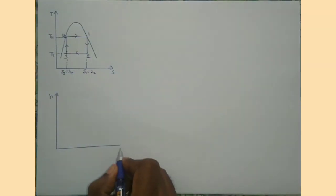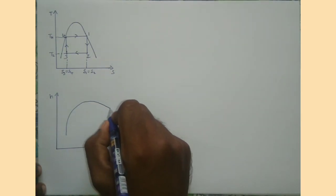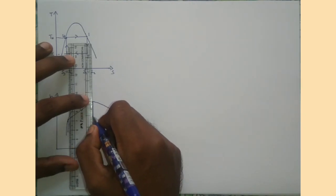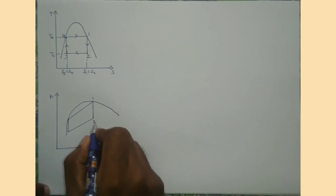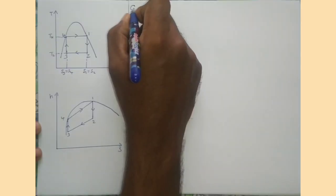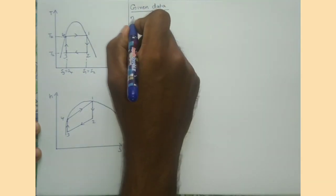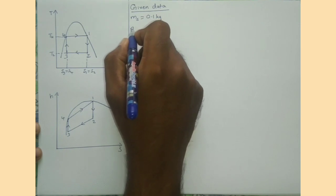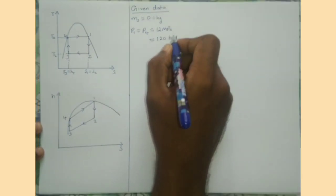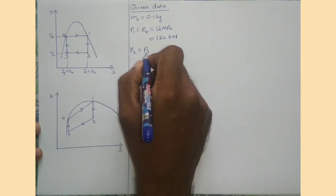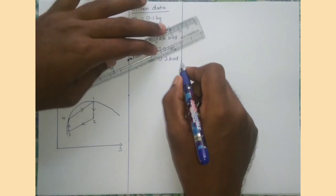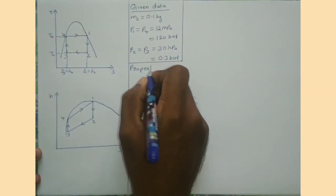Now I am drawing the HS diagram of the Carnot cycle. Now we can write the given data of the question. The mass of water or steam is given: ms equals 0.1 kg. Also, boiler pressures P1 equals P4, i.e. 12 MPa, which is 120 bar. Also, the condenser pressures P2 equals P3 equals 30 kPa, i.e. 0.3 bar.